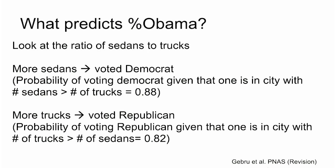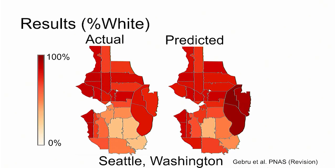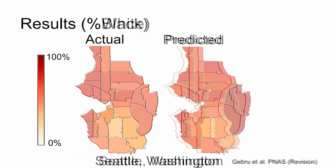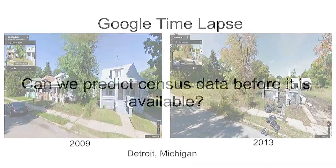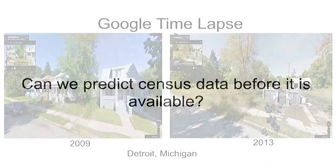We can predict the racial makeup of cities — here's an example in Seattle. We can predict crime rates, and what car attributes are most highly correlated with crime. If you see vans, be careful. We can also do this analysis across time — you can see time-lapse images of Brooklyn, 2007 versus 2014, and see how it's totally changed economically. You can see the opposite happened in Detroit.